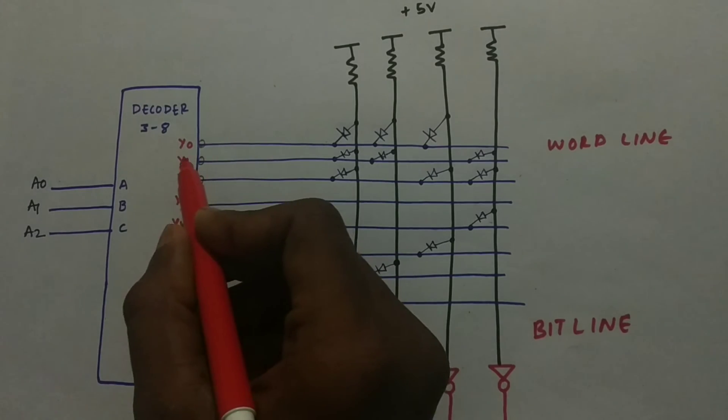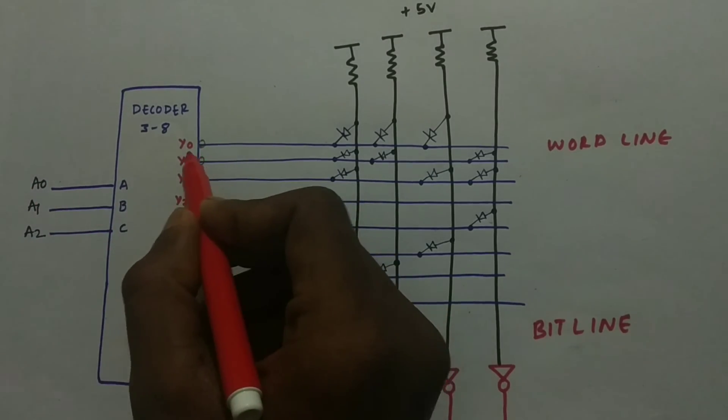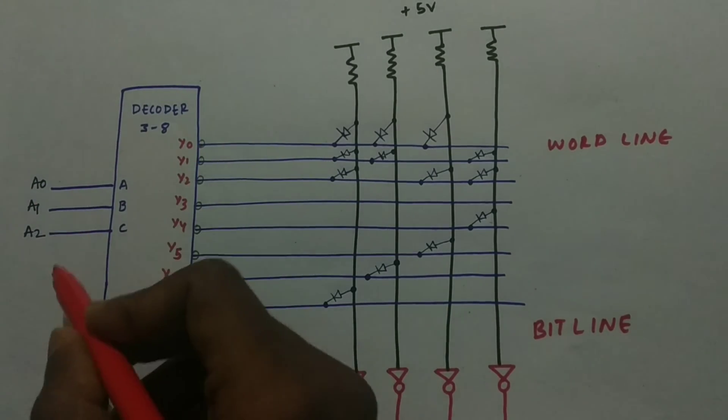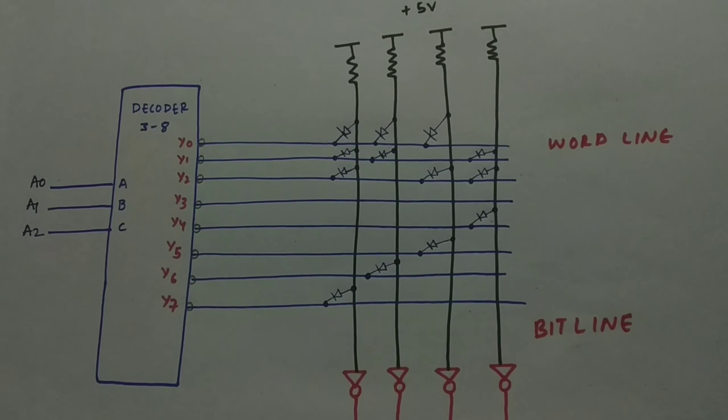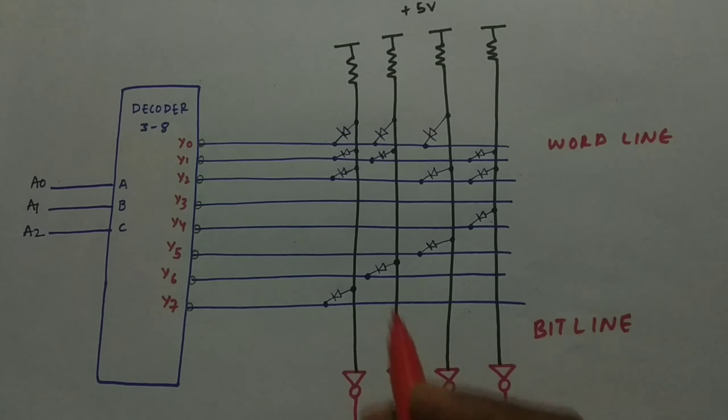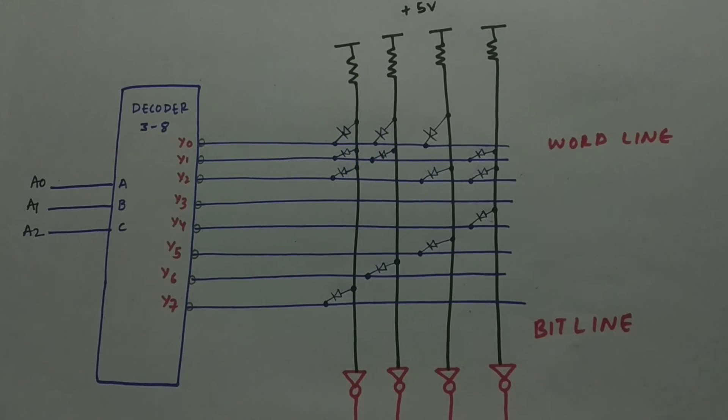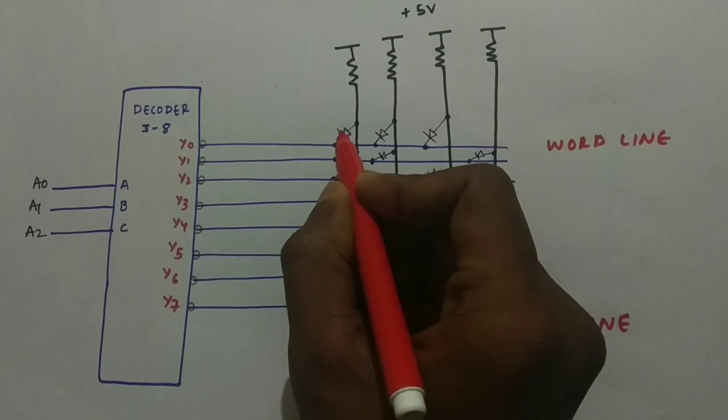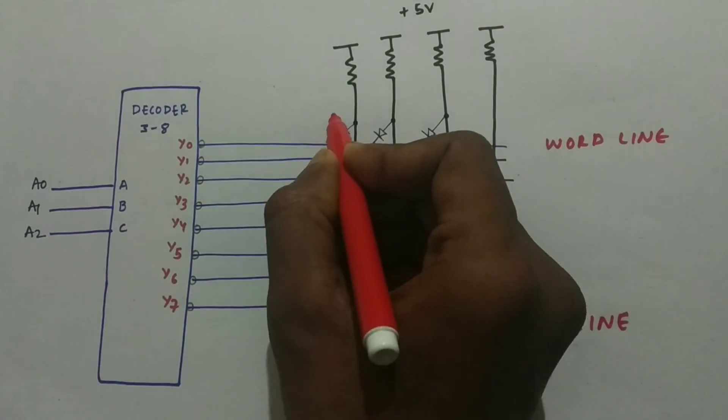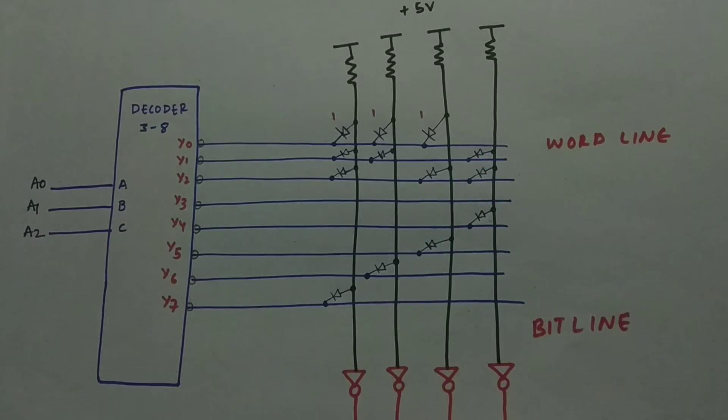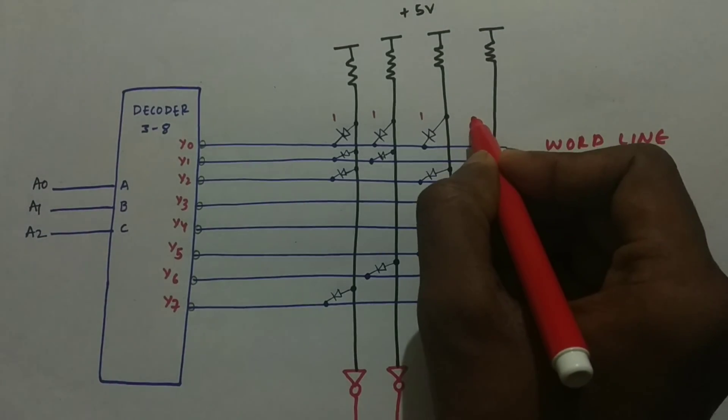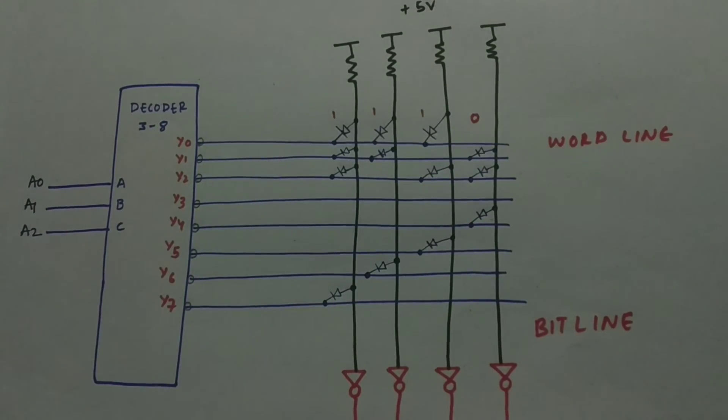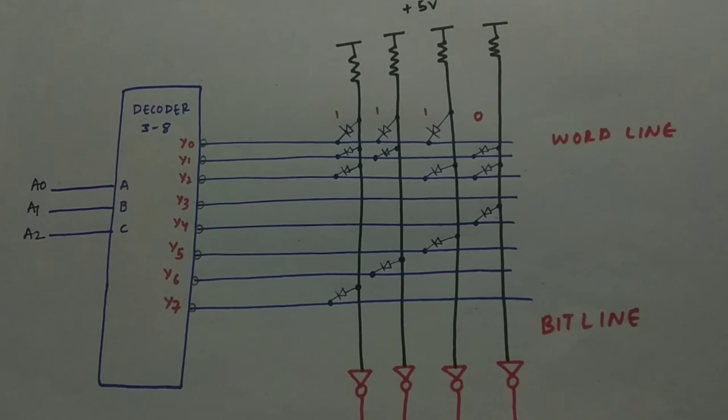So this word lines get selected whenever we give the input. So whenever, for example, 0 0 is given then Y0 will be selected. So 1 0 1 is given then Y5 will be selected. So we need to store the truth table. So wherever the diode is there at that point, we have a memory 1. This cell will store as a 1. This will be stored as 1. This will be stored as 1, 1 and 1 and where the diode is not there, it will be stored as 0.